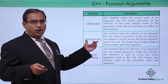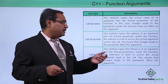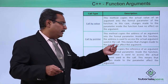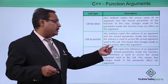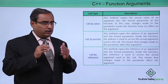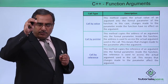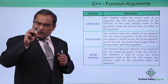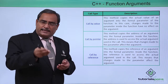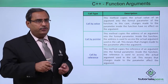The next method is call by pointer. Here, this method copies the address of an argument into the formal parameter. Inside the function, the address is used to access the actual argument used in the call. This means that changes made to the parameter affect the argument. We are passing not the argument itself, but the address of the argument. As a result, the parameter receives the address of the argument, so whatever changes are made at those addresses within the function body can be reflected and observed from the caller function when control returns.